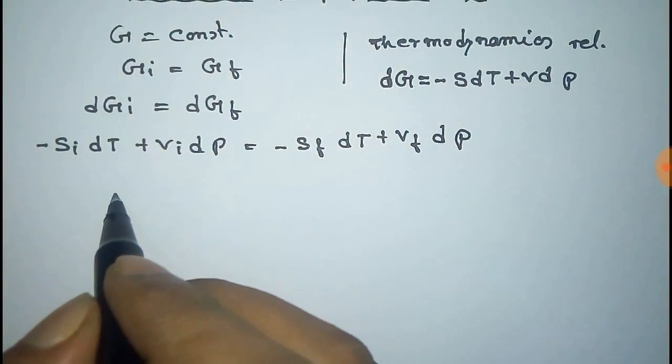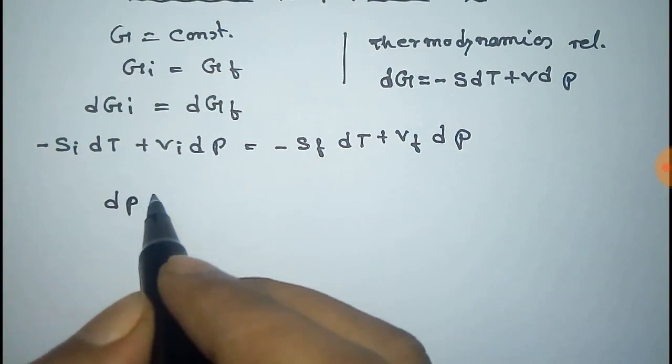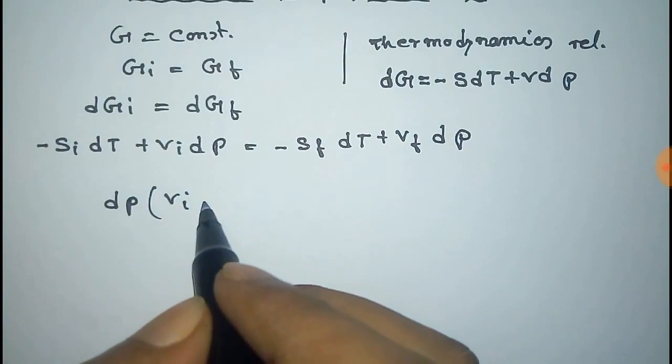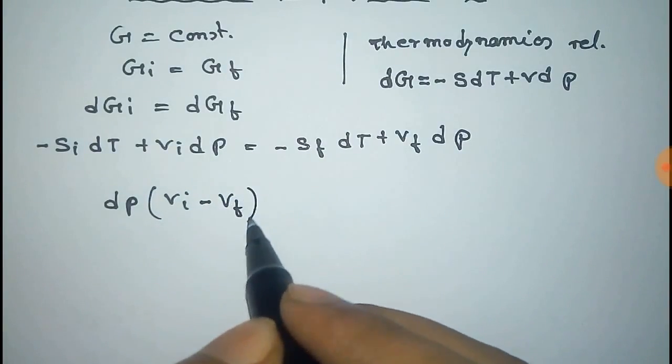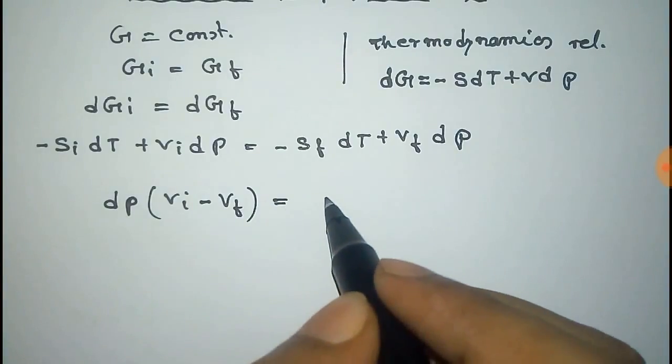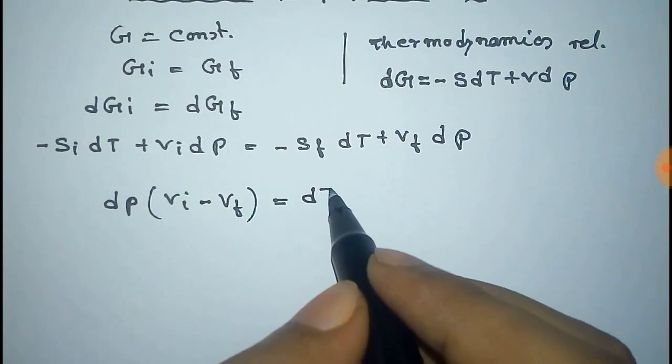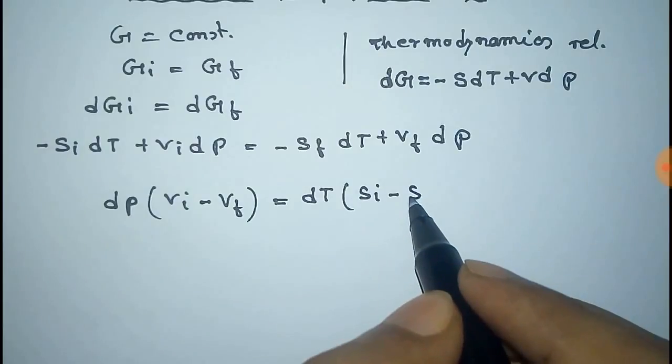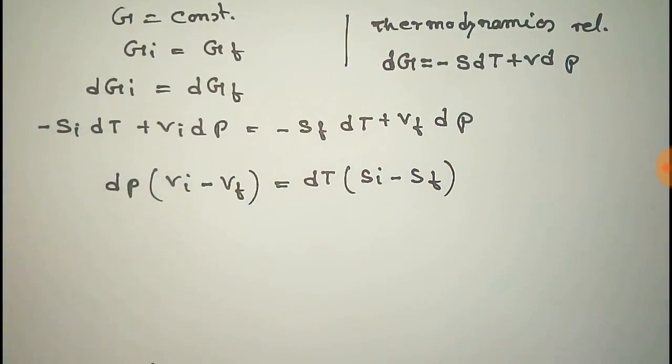Now we take dP common because we have to derive dP/dT. So it will be Vi minus Vf from this is equal to, take dT common, so it will be Si minus Sf.